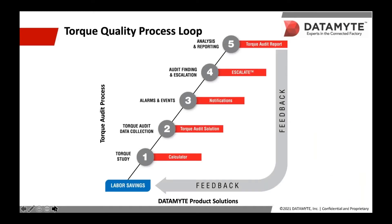Now, before we go over the seven steps of residual torque management, I'd like to introduce the concept of the torque quality process loop. The diagram provides a quick view of some of the core steps in the process and the correlating Datamite solution.